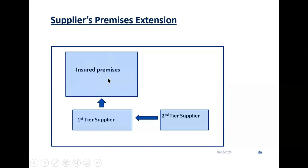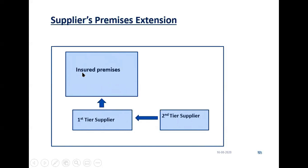Here is the insured premises. He is taking supplies from a direct supplier — we call it direct supplier or first supplier. Now this supplier may be independent, or they may also be dependent on another supplier. Sometimes they are also dependent on another supplier who has no direct connection with the insured. This second supplier gives some component to the first supplier, and after processing or completing the assembly, they supply to the insured. For example, if this insured premises is Maruti Udyog, and this supplier is making bonnet assembly, some components of the bonnet are being supplied by a nearby vendor.